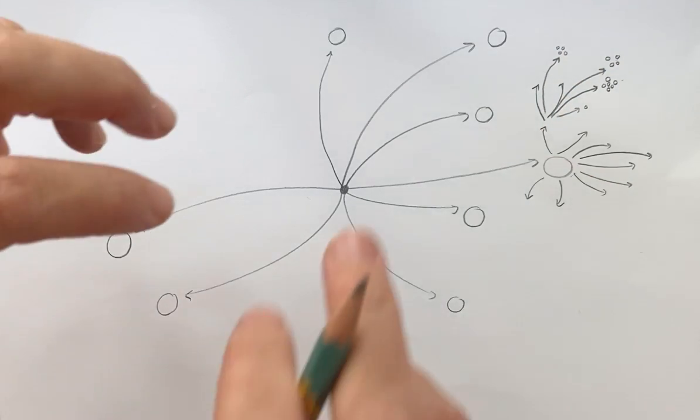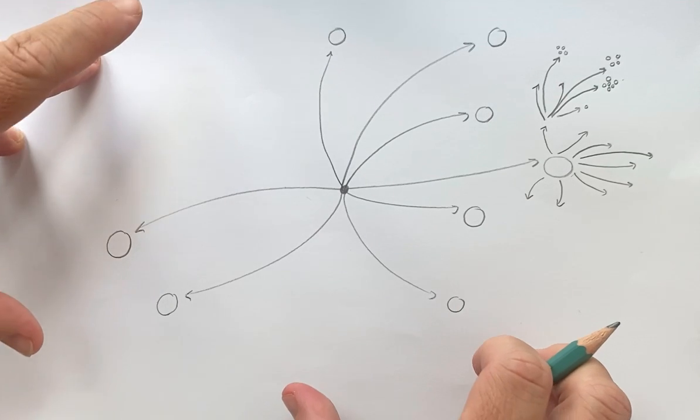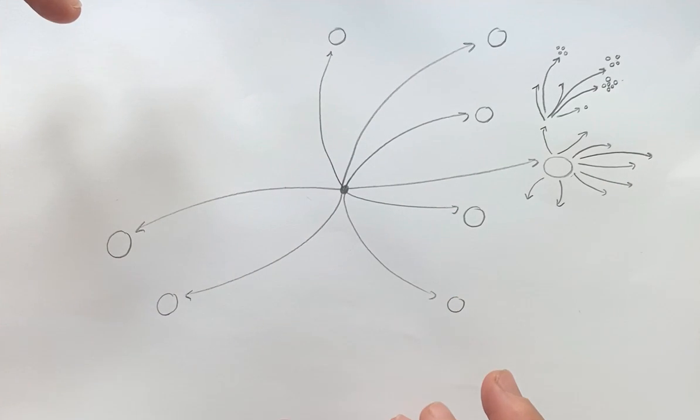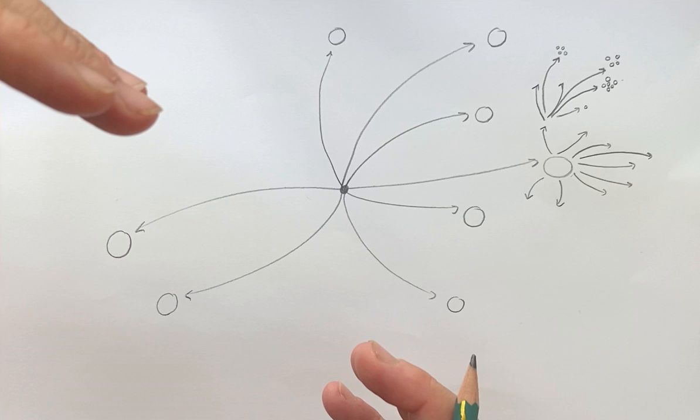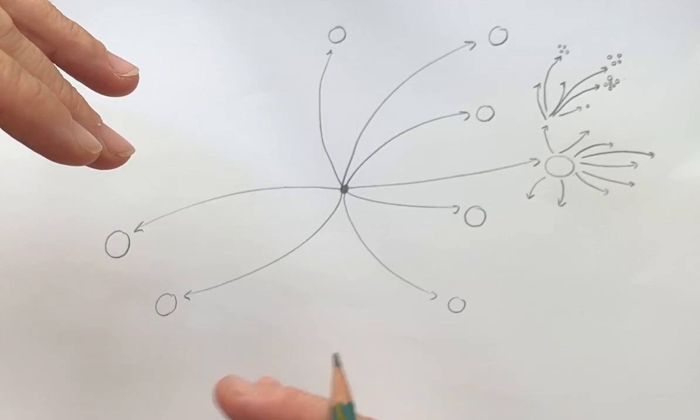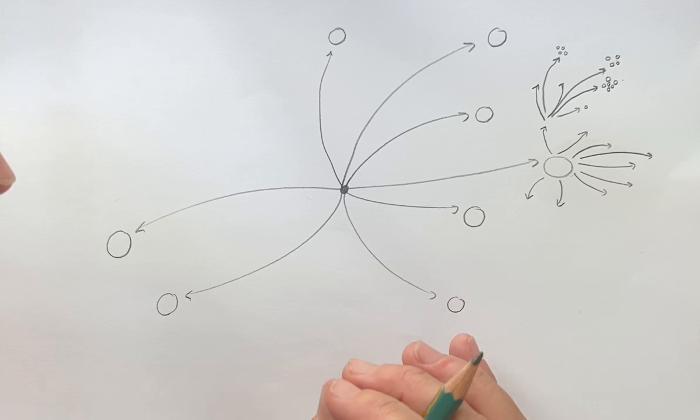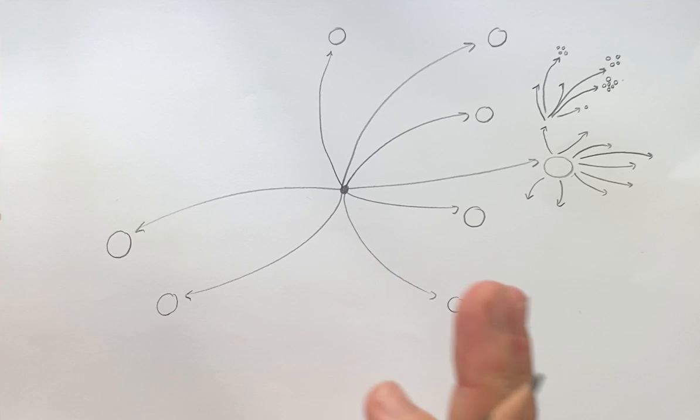Doing this allows you to do two things. It allows you to think about the different options that you're contemplating critically because you've got the information to be much more informed. The second thing it helps you to do is develop a career management strategy in order to be able to move from A to B.